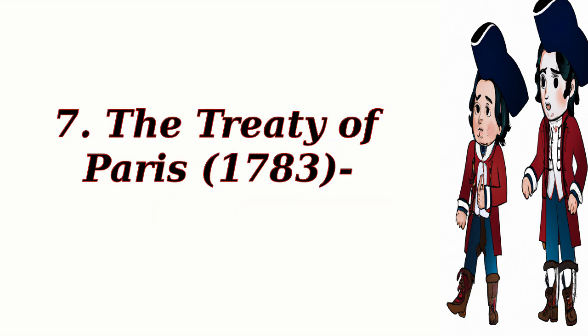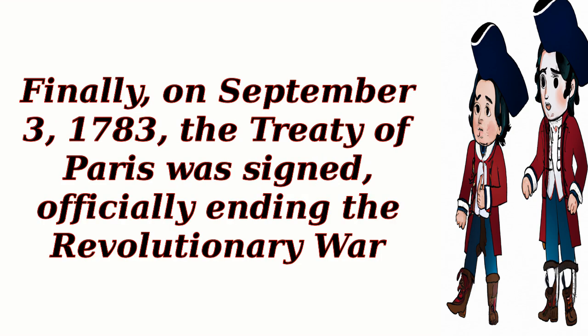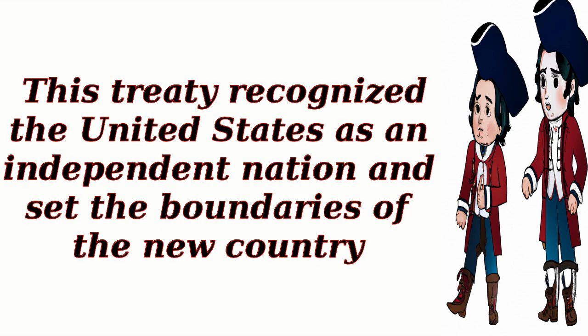7. The Treaty of Paris, 1783. Finally, on September 3, 1783, the Treaty of Paris was signed, officially ending the Revolutionary War. This treaty recognized the United States as an independent nation and set the boundaries of the new country.